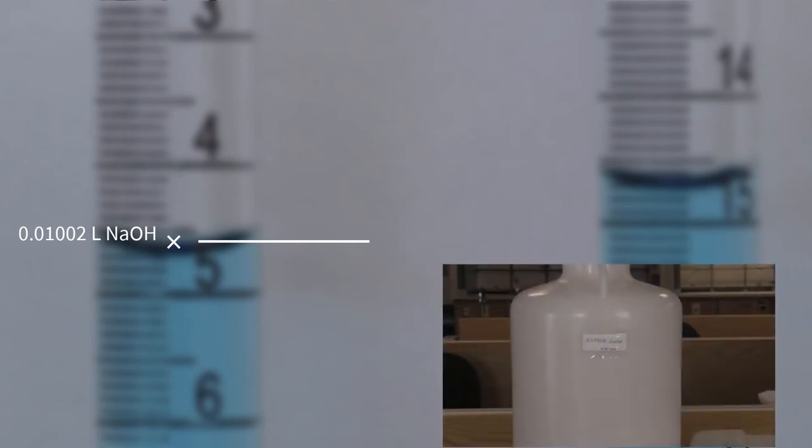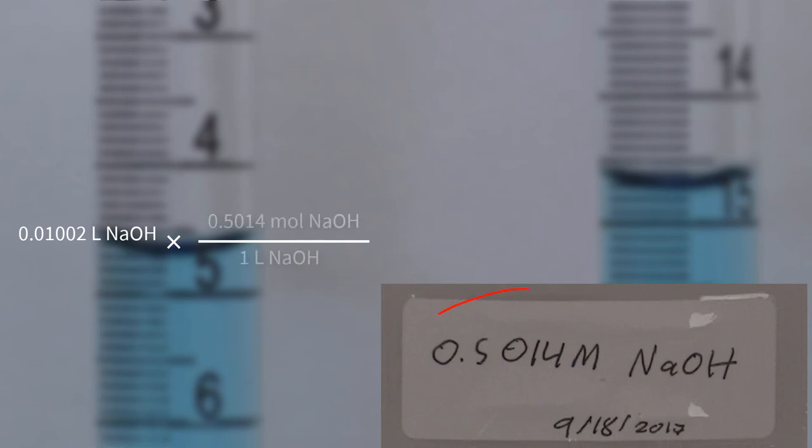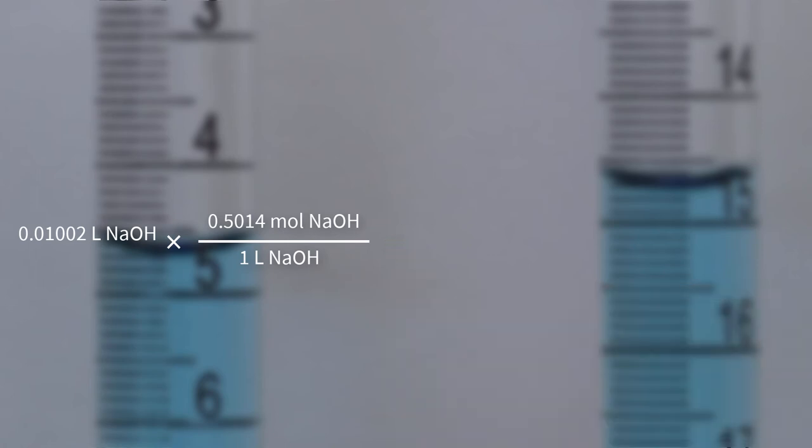The next goal is to determine how many moles of sodium hydroxide Lloyd added to the flask. We can figure this out by multiplying the volume of the sodium hydroxide in liters by the molarity of the sodium hydroxide. Where do you find the molarity of the sodium hydroxide? It is on the container where you obtain the solution. Make sure that you record this in your lab notebook. In this case, the molarity of the sodium hydroxide is 0.5014. But for your experiment, it may be something different. Let's include this molarity in our calculation. Liters are on the bottom so that we can cancel out the liters of sodium hydroxide added.